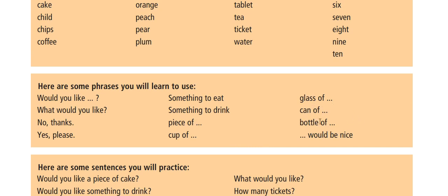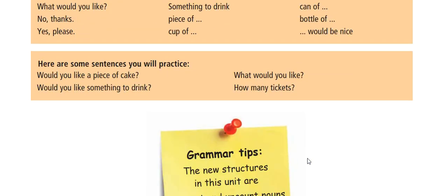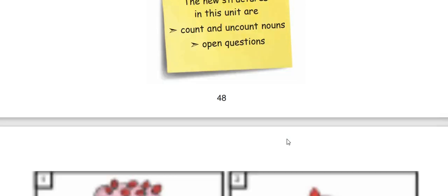These are the half phrases we will learn later: dash would be nice. Here are some sentences you will practice: Would you like a piece of cake? Would you like something to drink? What would you like? How many tickets? Grammar tips — structure, count and uncount nouns, and open questions.